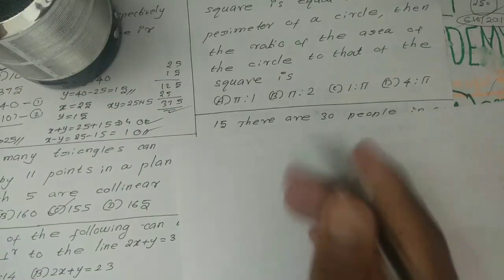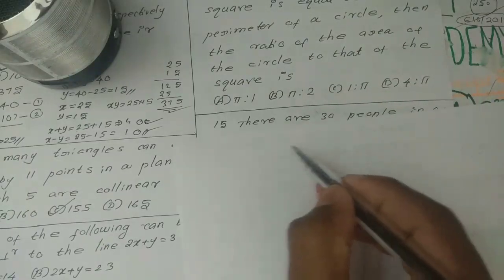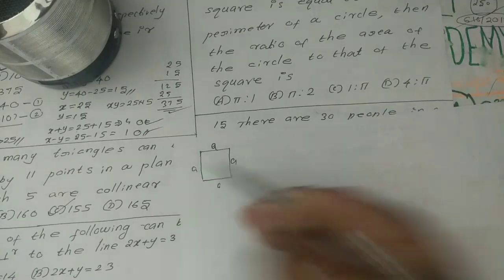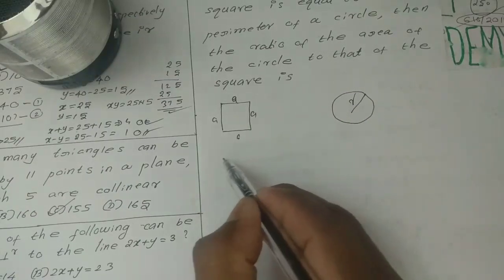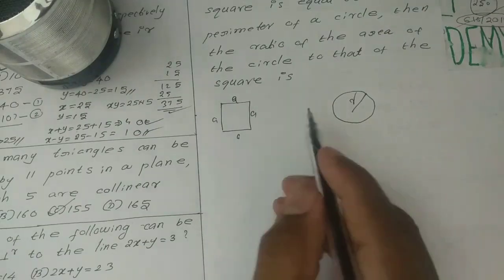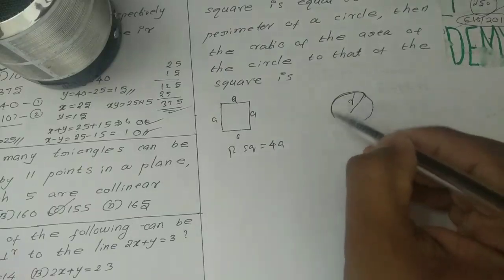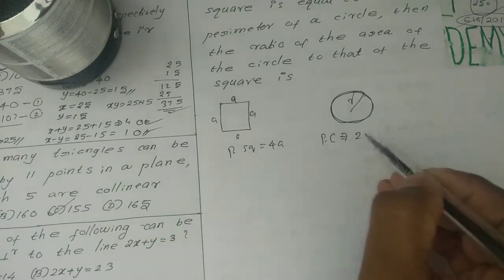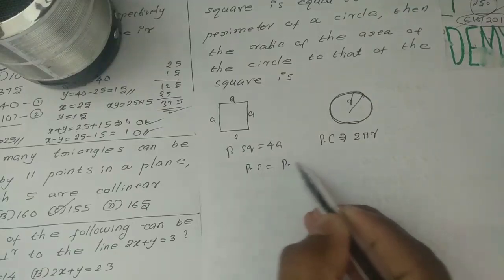If the perimeter of a square is equal to the perimeter of a circle, then what is the ratio of the area of the circle to that of the square? Let the side of the square be a, so the perimeter of the square is 4a. The perimeter of the circle equals 2 pi r. Setting them equal: 2 pi r equal to 4a.